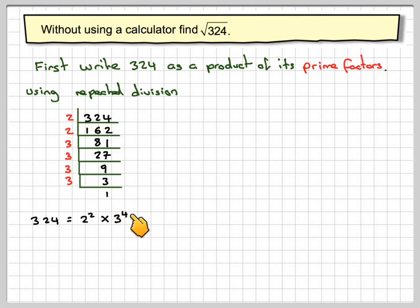Now, it might be easier to split this up. We don't have to. As 2 squared times 3 squared times 3 squared. So split up 3 to the 4th as 3 squared times 3 squared. Now, we'll come back to the square root bit in a minute.